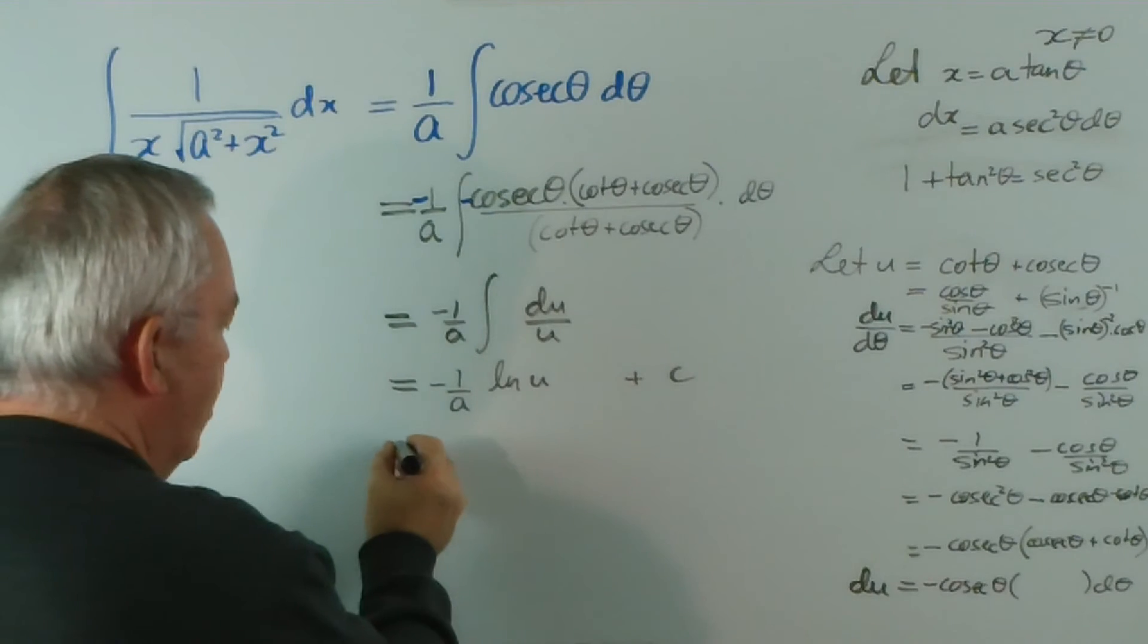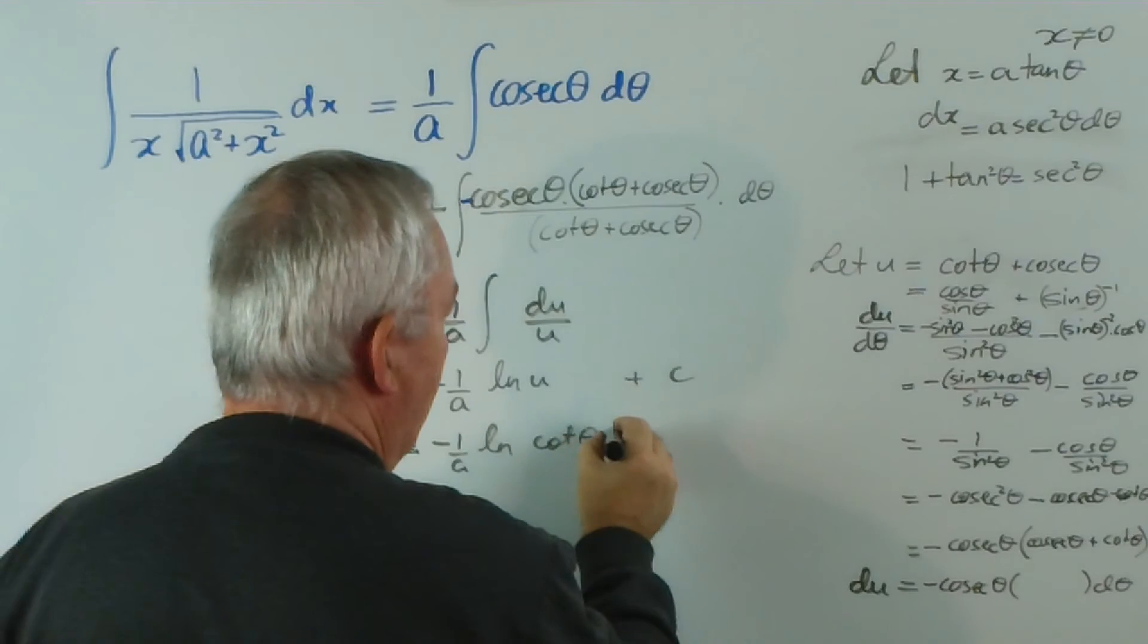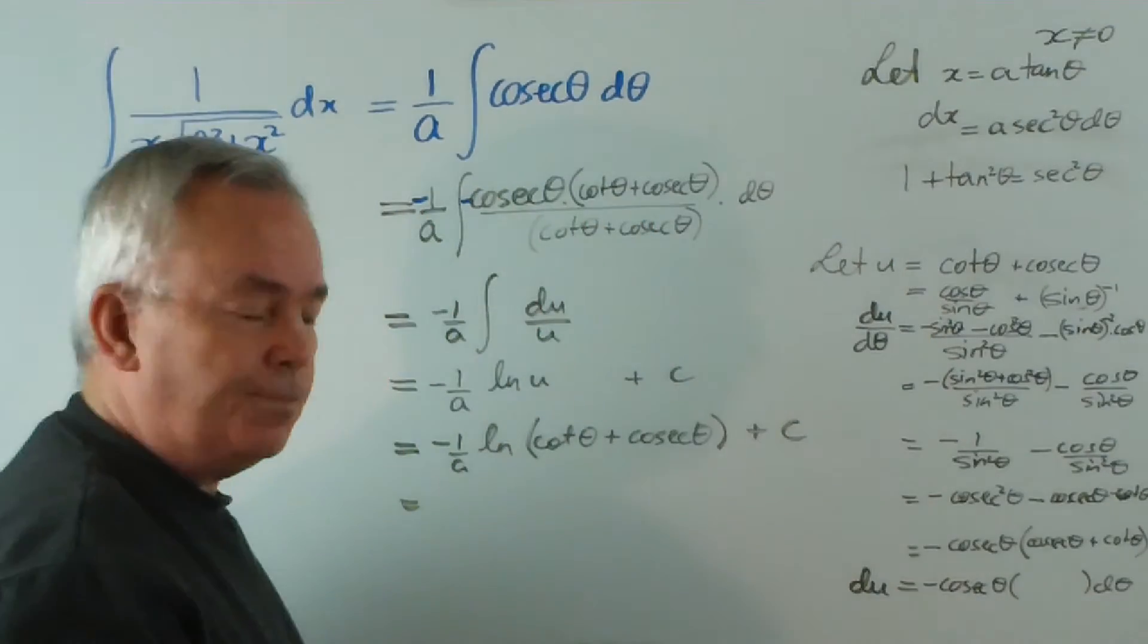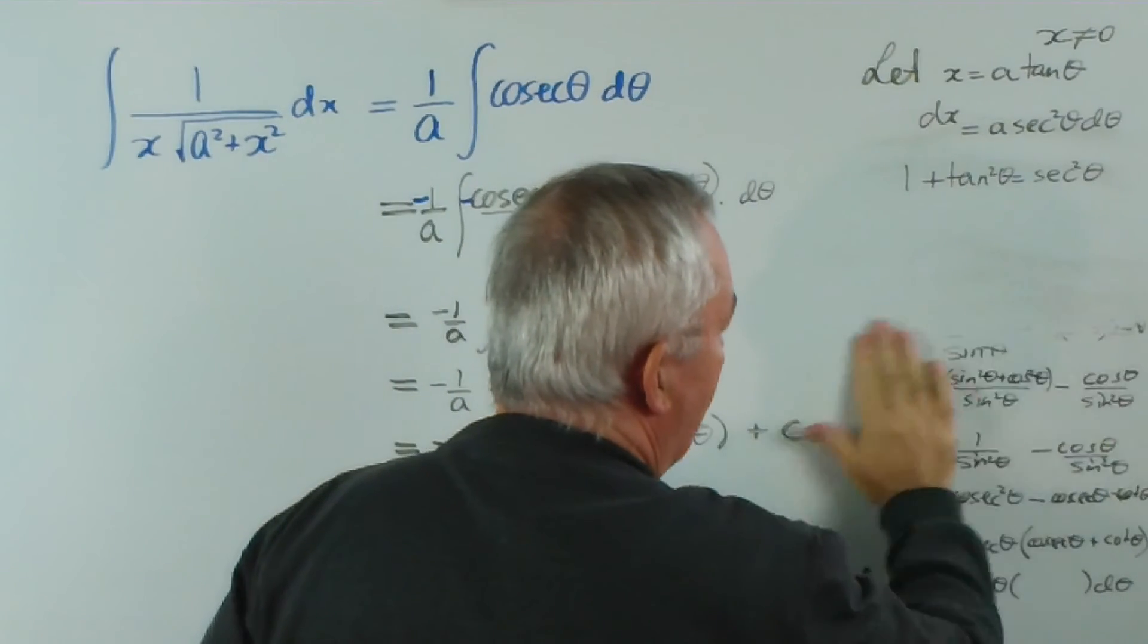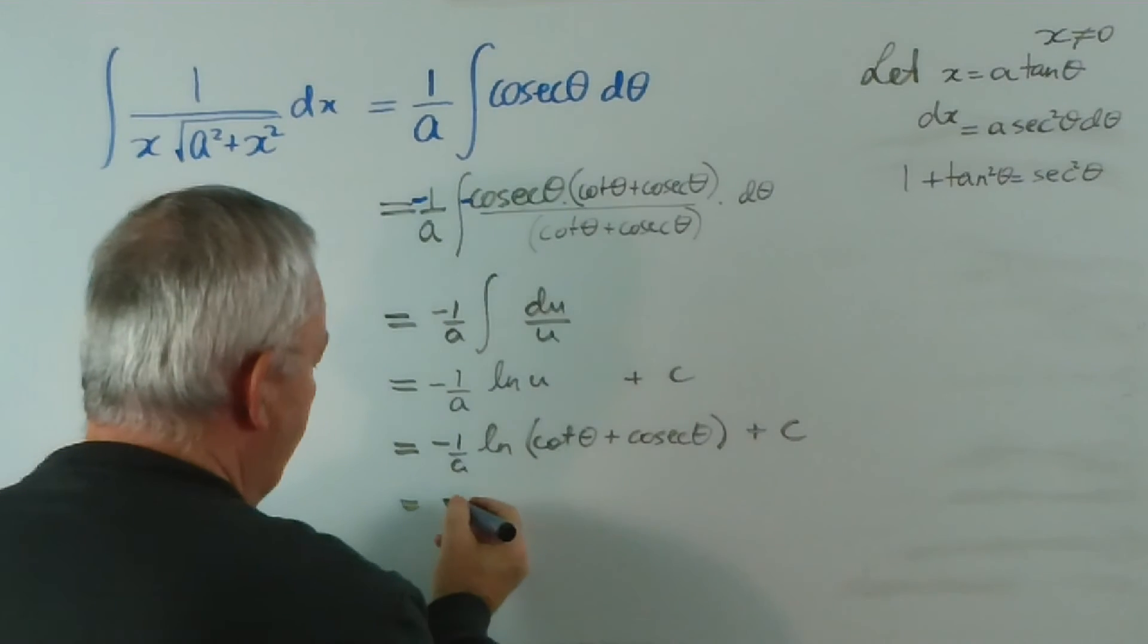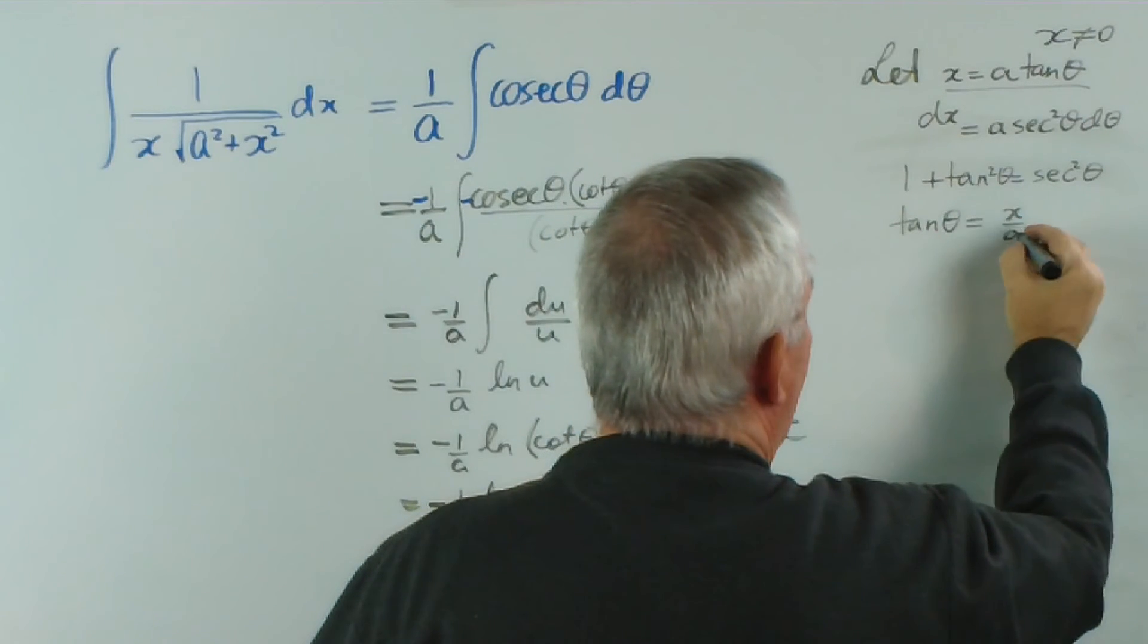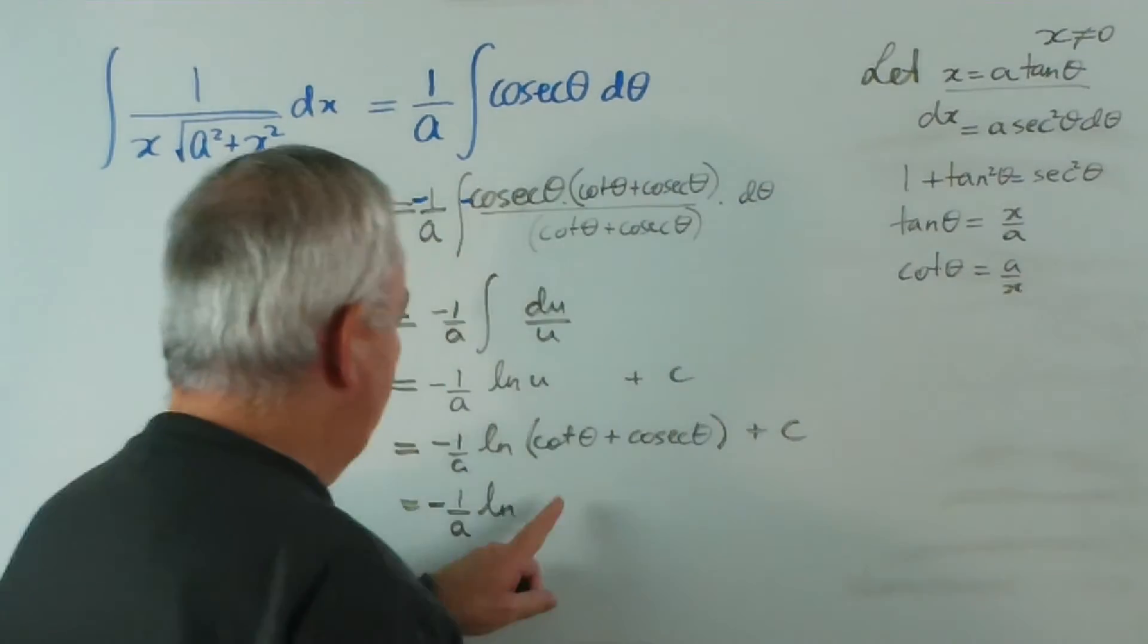All that remains now is to substitute back in. So we get minus 1 on a, logarithm. u was this. And then we have to substitute, knowing that x is a tan theta. And I'm running out of board space. I think you'll forgive me if I rub this off now. Since it's done its job. So we might just work up into there. So we have minus 1 on a, log. Now, let's do some working here. This here means that tan theta is x on a. So cot theta would be a on x. I think that has resolved that one.